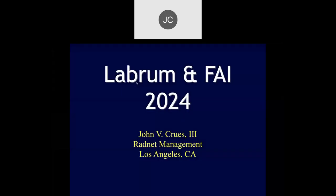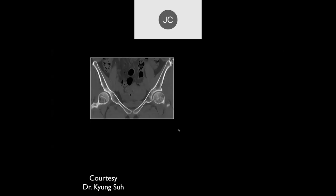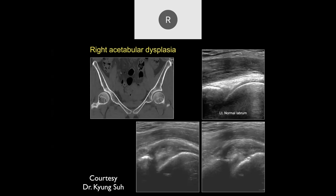Let's move on to labrum and FAI, staying on the hip. Robert, what do you think of this case — patient with right hip pain? Looking at the right hip, it looks like there's some acetabular under-coverage and a protuberance there, probably a little bit increased clear space medially than on the opposite side. On the frog-leg views we can again see the under-coverage on the right side. The CT scan confirms that, and this is what a normal labrum looks like — and this is actually a torn labrum.